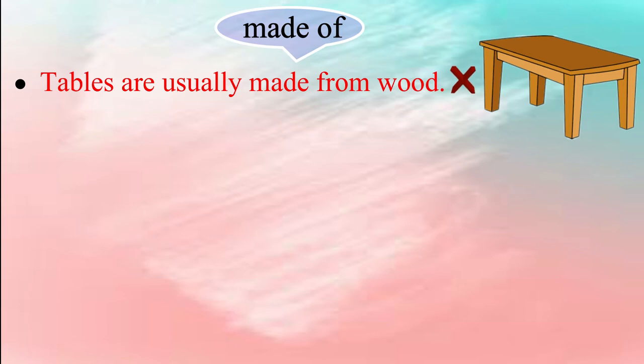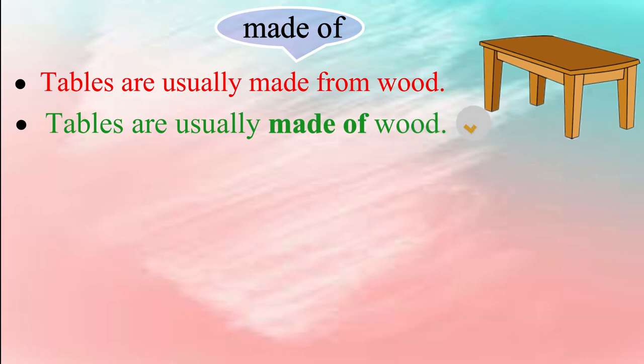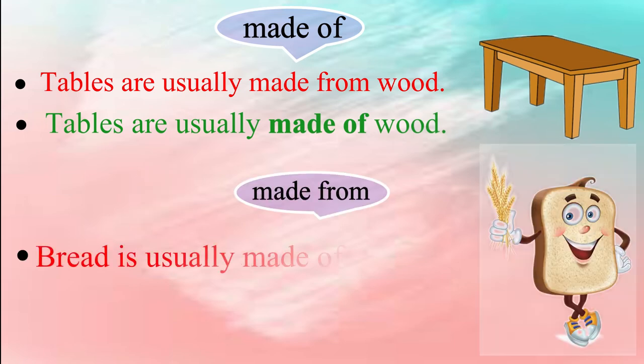So don't say 'Tables are usually made from wood.' Say 'Tables are usually made of wood.' Don't say 'Bread is usually made of wheat.' What should you say?